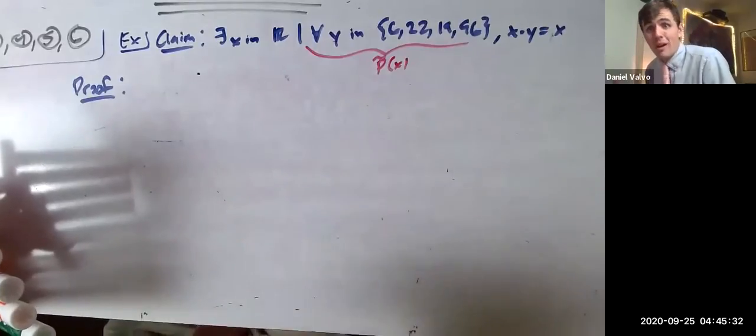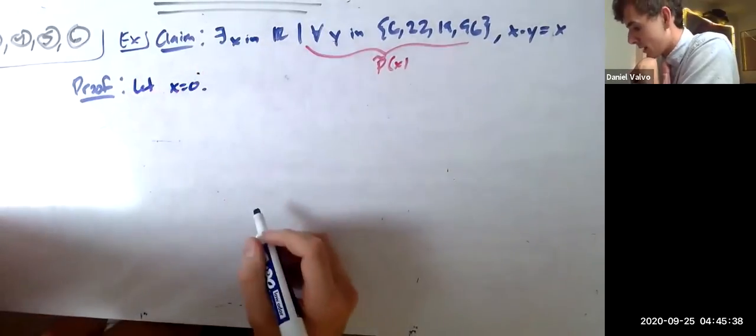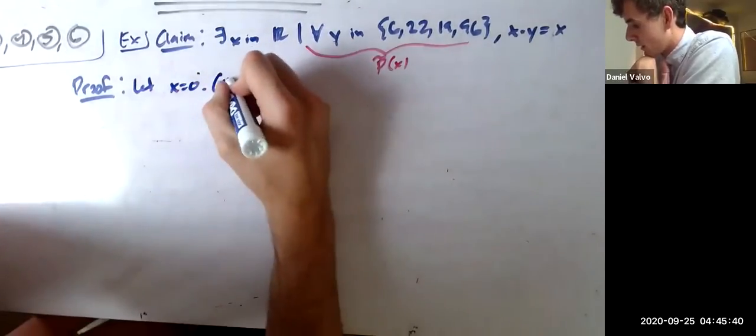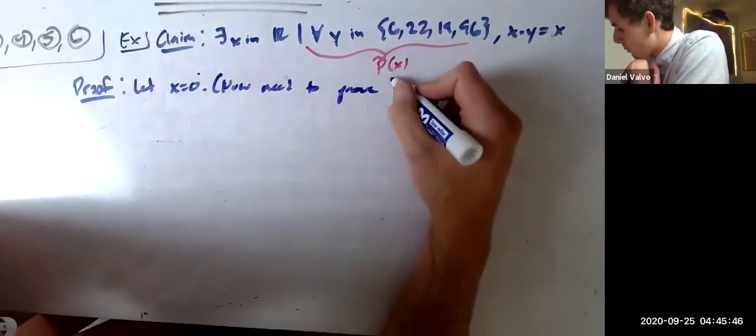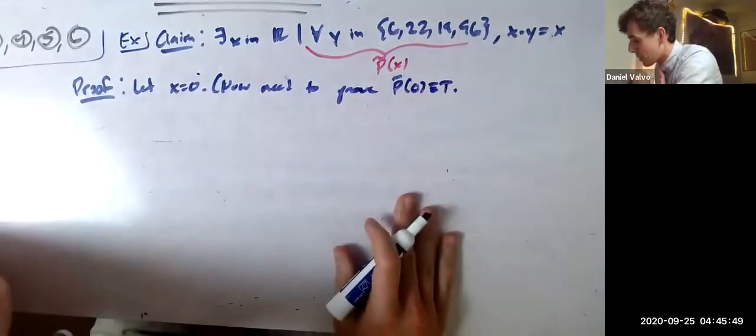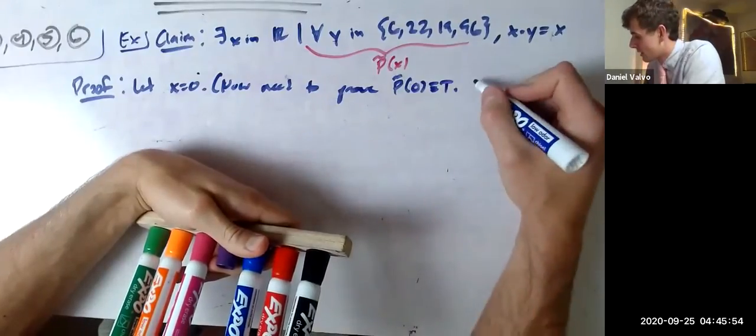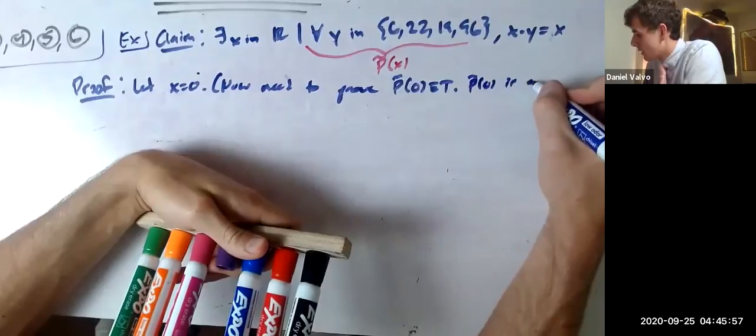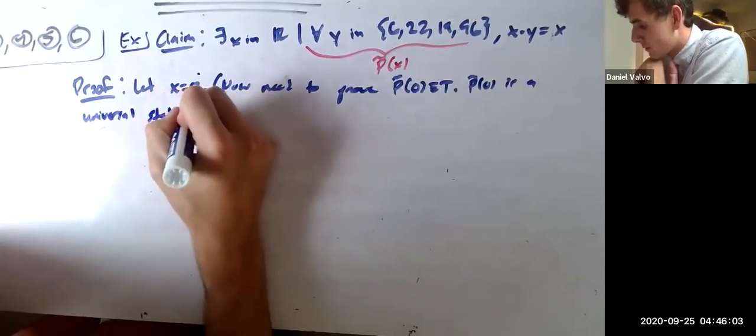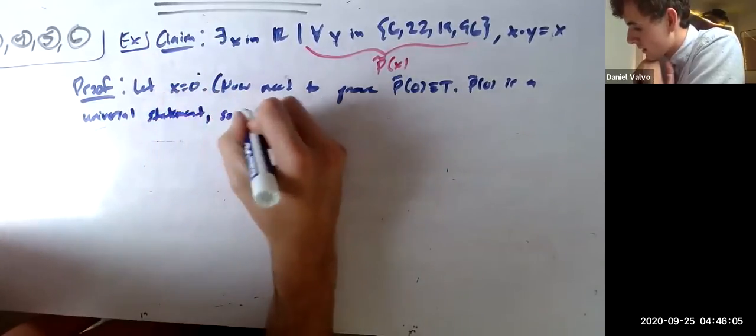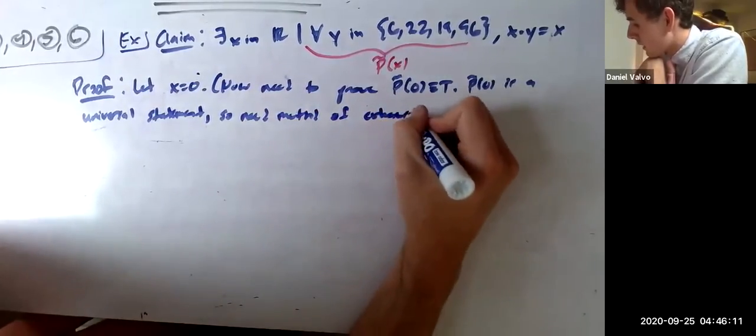To prove an existential statement true, you find an example. So I'm going to say let x equals 0 be our example. Now, need to prove that p squiggly of 0 is true. But p squiggly of 0 is itself a for all statement. It is a universal statement. So need method of exhaustion.